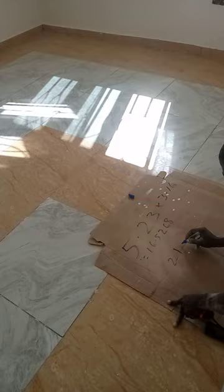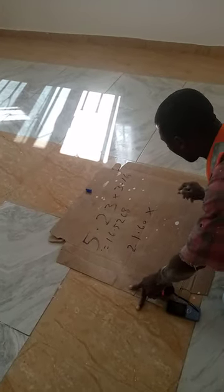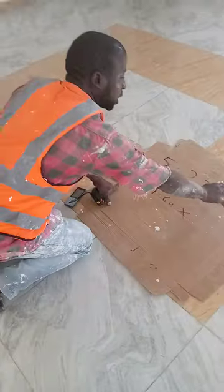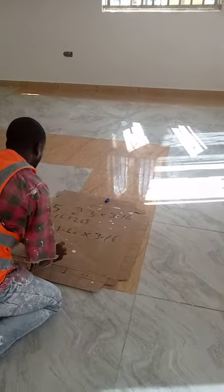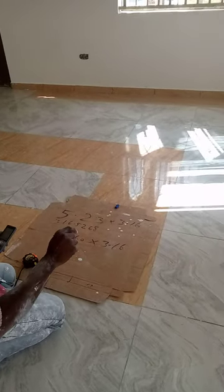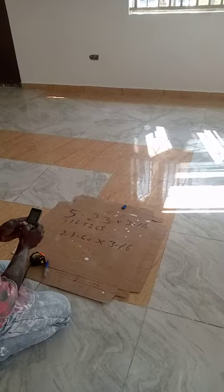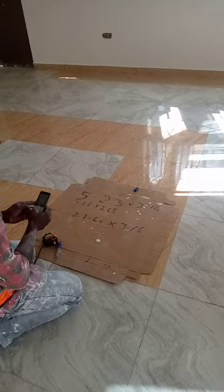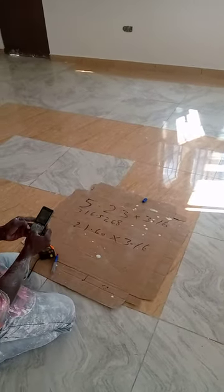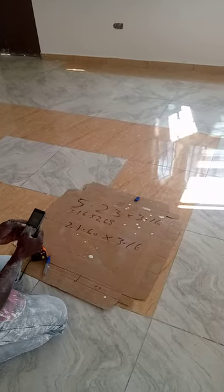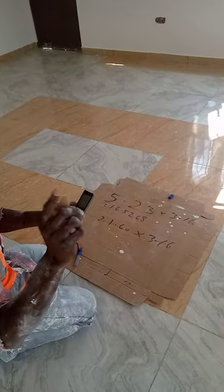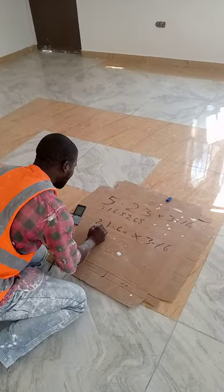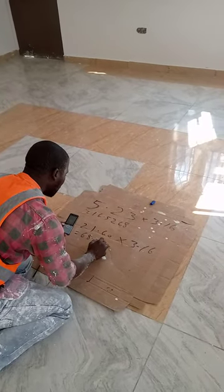This is another technique of calculation. You take 21.6 — the total length of the wall — and multiply it by 3.6, which is the same height. Right now: 21.6 times 3.6 — we have 68.256 square meters.